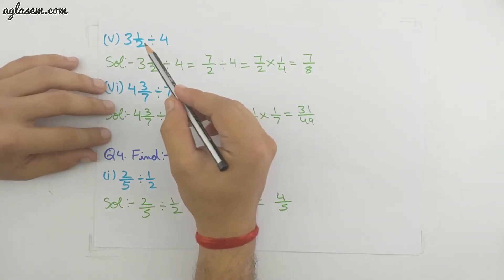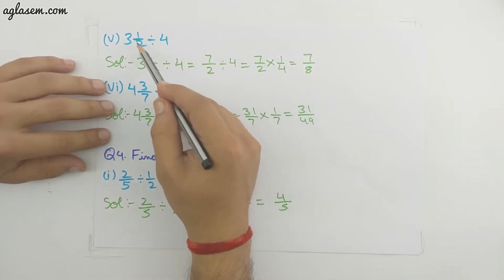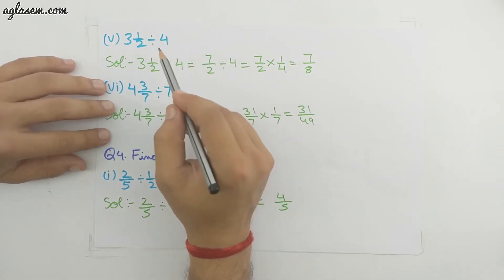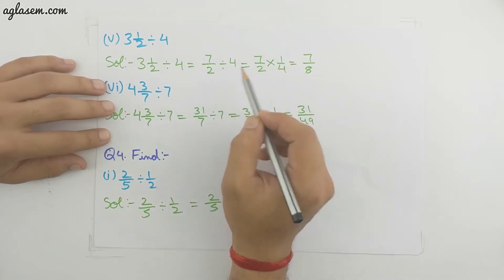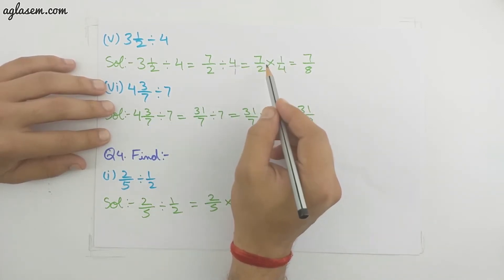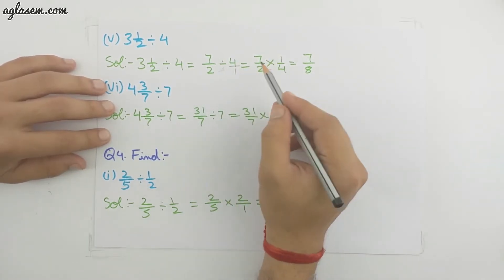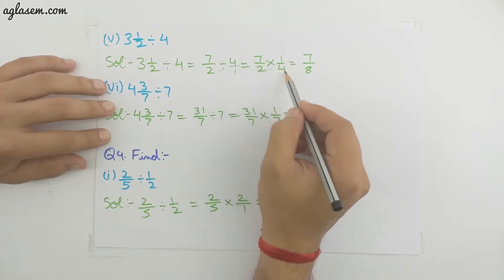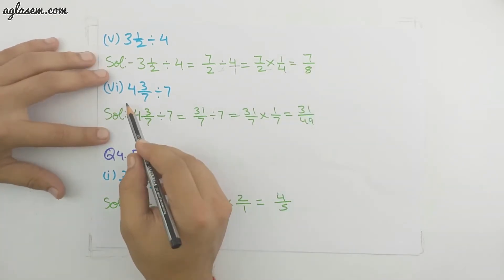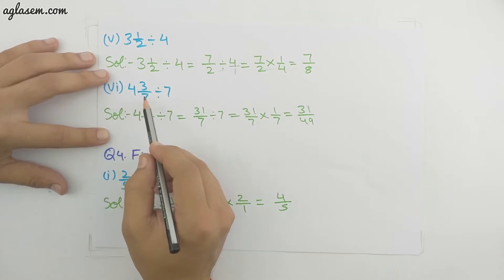Fifth part: 3 whole 1/2 divided by 4. The mixed fraction 3 whole 1/2 changes to 7/2, and 4 becomes 4/1. The divide sign changes to multiply and 4/1 becomes 1/4. Multiplying 7/2 by 1/4 gives 7/8, which is a proper fraction.